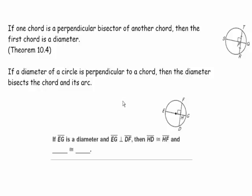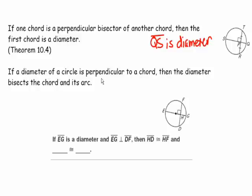Two more critical theorems: First, if one chord is the perpendicular bisector of another chord — here chord SQ is perpendicular to and bisects chord RT — then the first chord is a diameter. So QS is the diameter. Second, if a diameter is perpendicular to a chord, then the diameter bisects both the chord and its arc. If EG is a diameter perpendicular to DF, then HD equals HF, and arc DG equals arc FG.